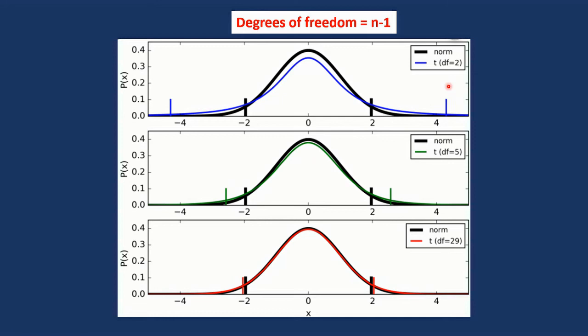As you see, as the number of the sample reaches toward the 30, then the curve is similar to the normal distribution. That's why once we reach number 30, we can stop using the T distribution or the T tables, and we can go for the Z tables.